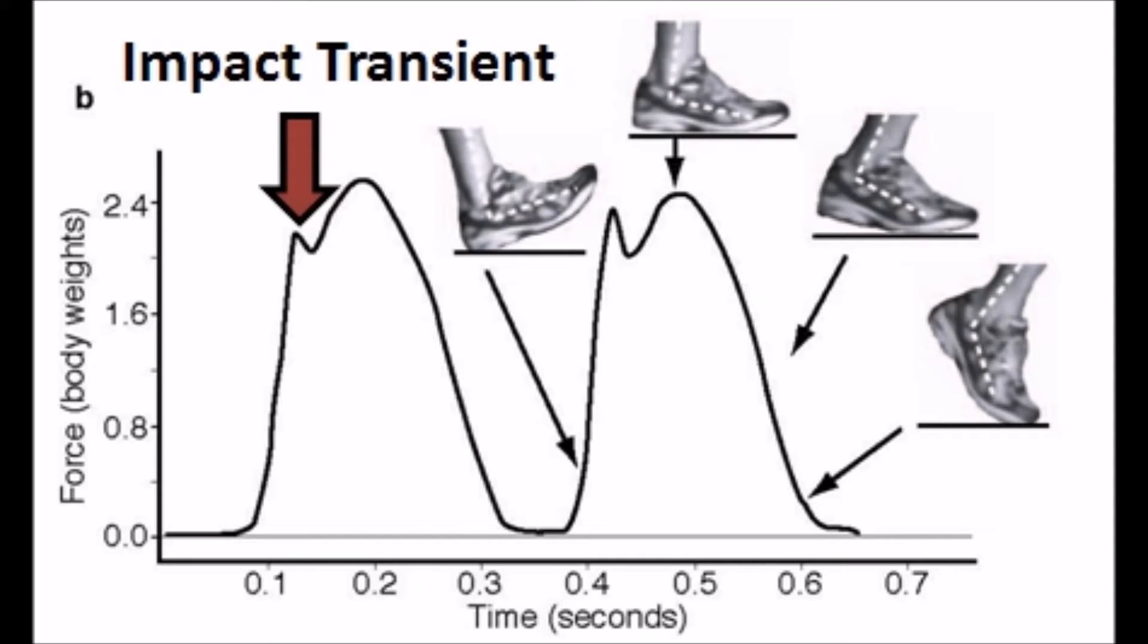This stoppage or deceleration period is more intense and has a longer duration than a forefoot strike landing. This impact transient or the abrupt braking force period that is produced when the heel strikes the ground first during running disadvantages a heel strike runner.